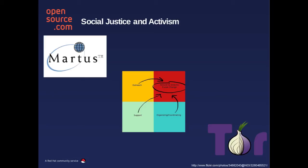In the social justice and activism space, there are a number of software toolkits that allow folks doing work to report human rights abuses, to overthrow repressive regimes, and to do other activist work — work where it's probably not good that people know they're doing these things, because they're letting folks know that other people are abusing others, and that can be bad for you. Martus and Tor actually help those folks contribute those reports anonymously and mitigate their fear of reprisal.